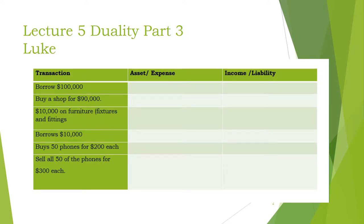We have a guy here who is called Luke. The first thing we are doing is recording the transactions for Luke's little business. Everything that goes on the left, which is a debit, must be matched with everything which goes on the right, which is a credit. What is a debit and what is a credit are actually the hardest things in accountancy to understand. The easiest thing is just to get used to discussing them — after a while it comes naturally. This is the concept of duality.